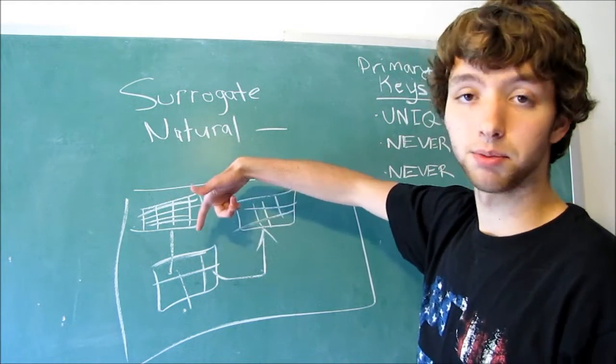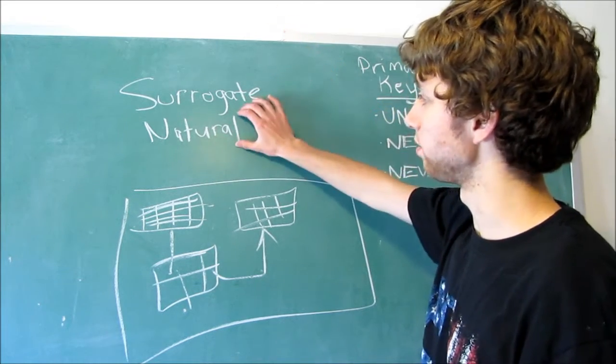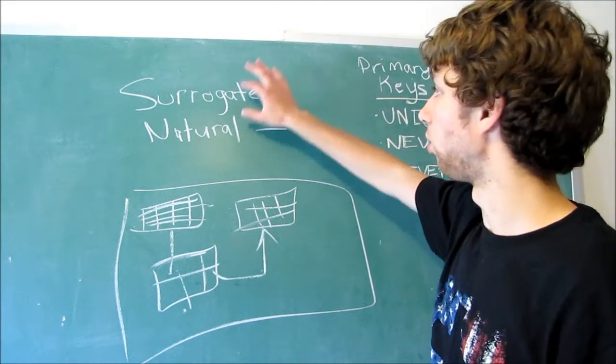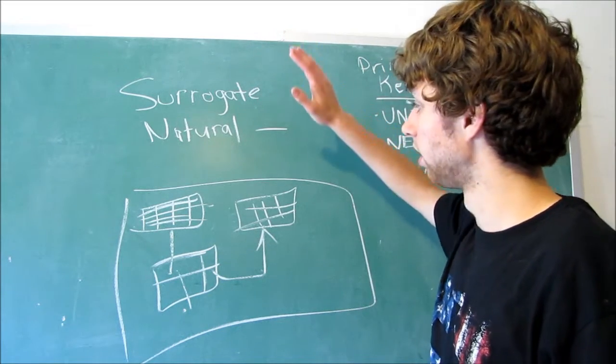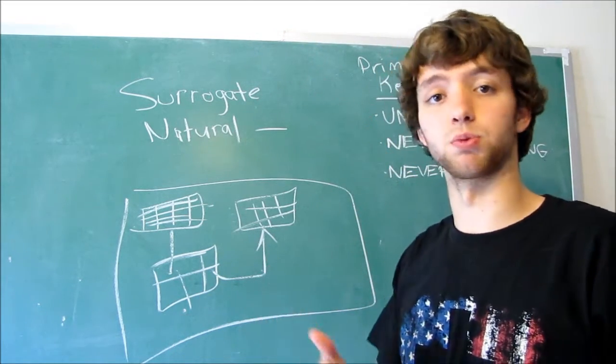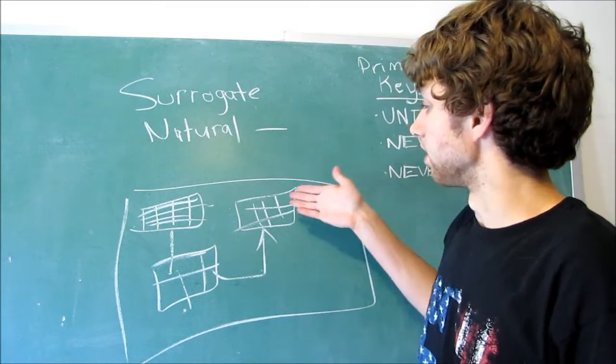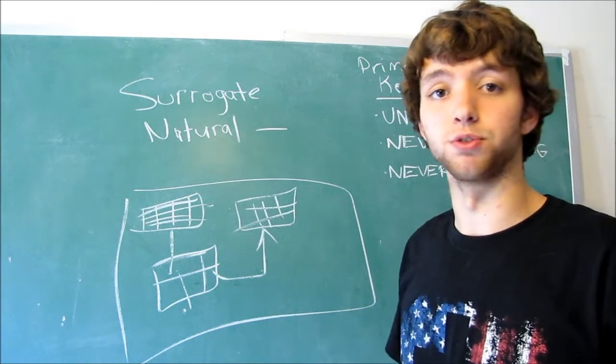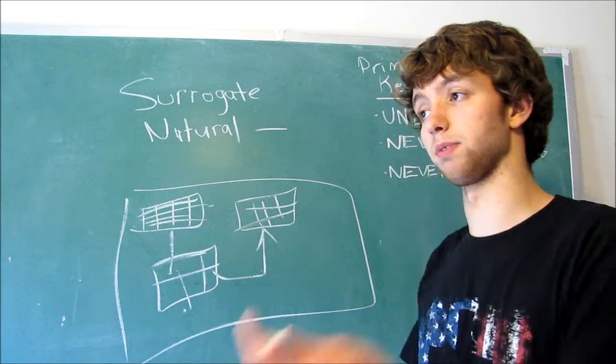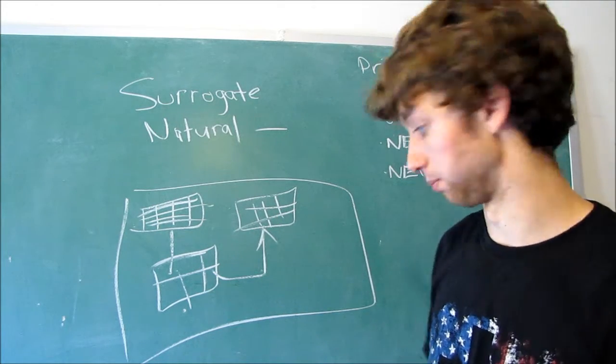When we define a database, typically, we want to try to either always use natural keys or always use surrogate keys, which are just made-up keys. We don't want to kind of flip-flop and switch. Because we want to try to keep it consistent, otherwise people using the database are going to be confused. Is this a natural key or is this a surrogate key? Is this something that actually has real-world value, or is it just a made-up number?